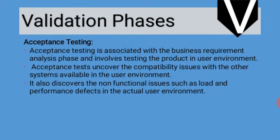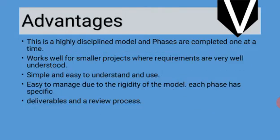The last stage is acceptance testing, which is associated with the requirement analysis phase. Acceptance testing checks whether the system we have created is acceptable to the user. It uncovers compatibility issues with other systems in the user environment and can also discover non-functional issues such as load and performance defects in the actual user environment.